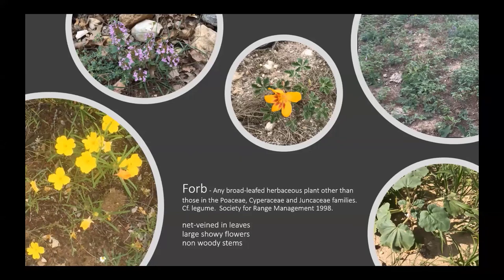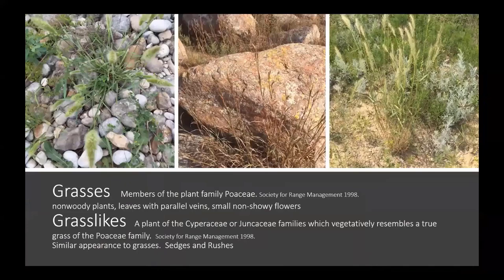Grasses are members of the grass family Poaceae. They are non-woody plants without that stiff ligneous structure, have leaves with parallel veins as compared to the net-veined leaves of woody plants and forbs, and have small non-showy flowers with overall smaller parts, making them a little harder to identify. Grass-likes — our sedges and rushes — are similar in appearance to grasses but can be distinguished by their growth characteristics.